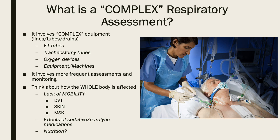A complex respiratory assessment may involve complex equipment — additional lines, tubes, and drains like an endotracheal tube or a tracheostomy; oxygen devices like a BiPAP or high-flow oxygen; or other equipment machines like a ventilator and the BiPAP machine that may need to be managed and will be a part of your assessment.